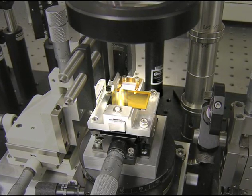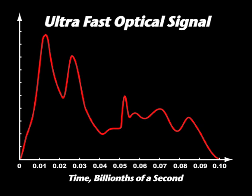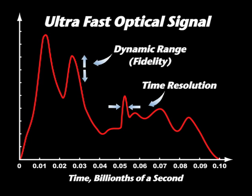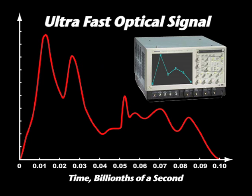The following animation shows how it works. Here is an ultra-fast optical signal that we wish to record. There are features on the signal that we would like to measure, both with fine time resolution and with high fidelity or dynamic range. A top-of-the-line oscilloscope would produce poor resolution and poor fidelity.